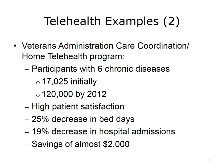Another example is what is being done at the VA. The Veterans Administration Care Coordination Home Telehealth Program initially covered 17,025 participants across six chronic diseases, among them diabetes and depression. This program continues to grow, with almost 120,000 veterans participating by 2012. There was high patient satisfaction reported, and a 25% decrease of bed days of care, and a 19% decrease of hospital admissions versus the usual care. There was also a savings of almost $2,000 per patient.